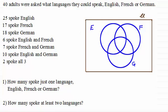So I need to put some numbers in here. And first of all then, we've got 40 adults were asked about what language they could speak. So the universal set must contain 40 people. We know that English is spoken by 25 of the adults, so put 25 there. And French was by 17. And German was by 18.